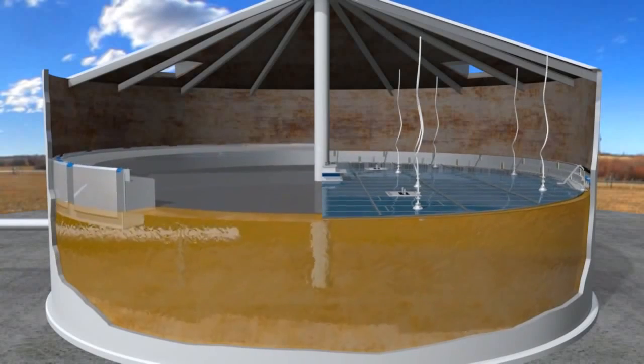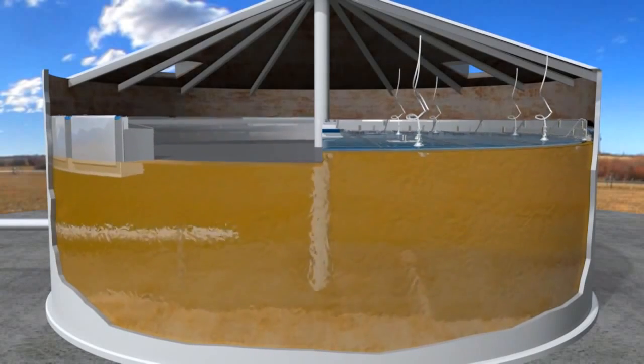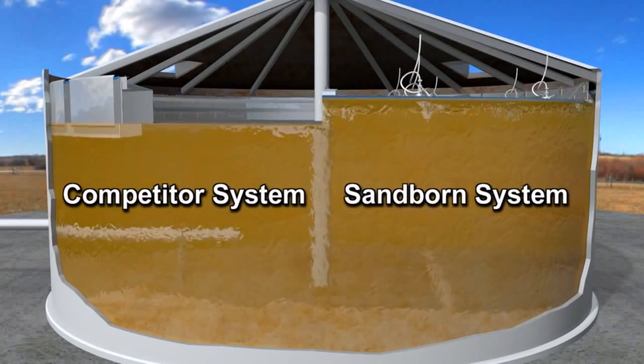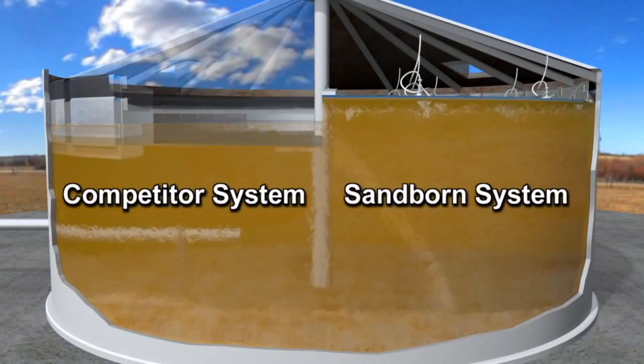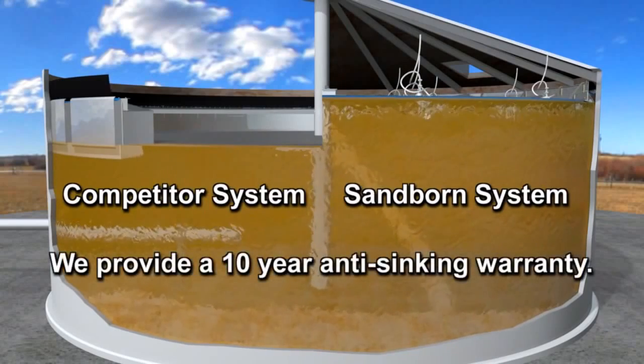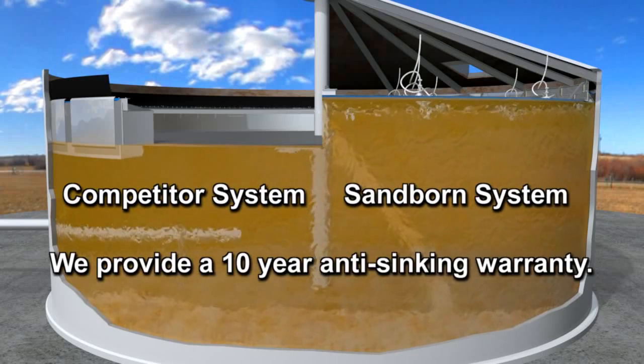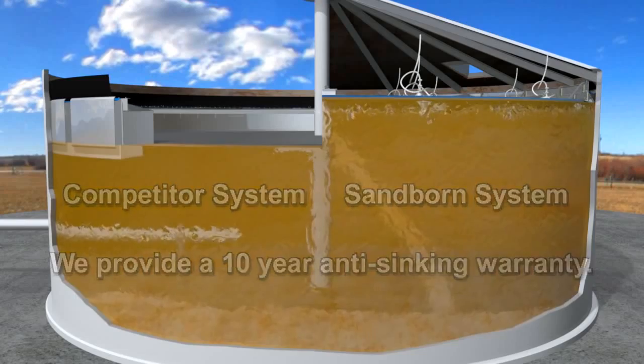A Sanborn low profile internal floating roof results in increased tank volume when compared to an internal steel floating roof. When further compared to an external floating roof tank, the Sanborn floating roof system is able to offer superior tank capacity and emission control.